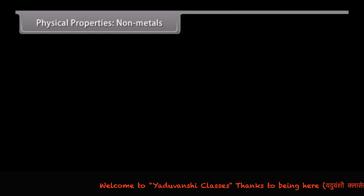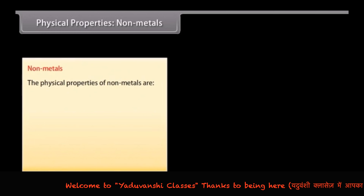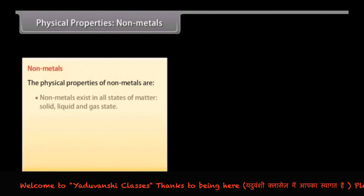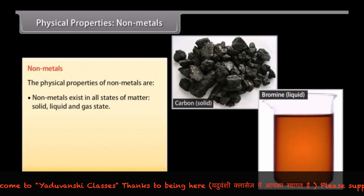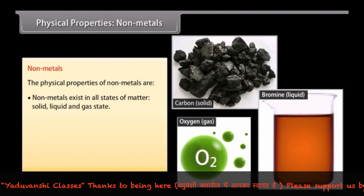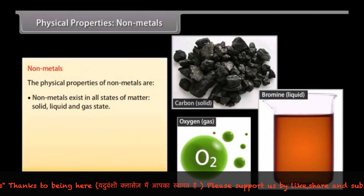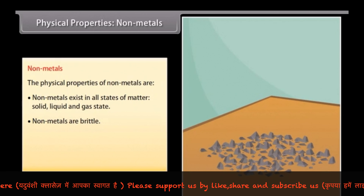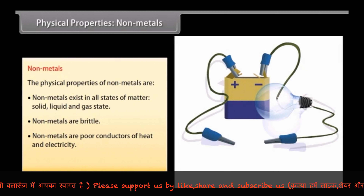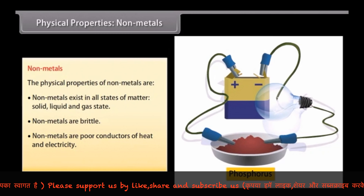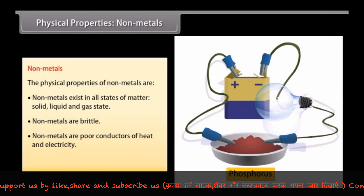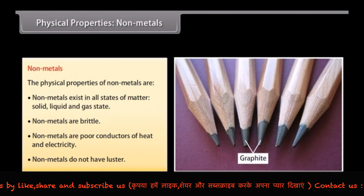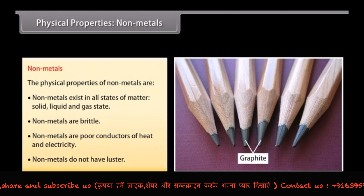Physical properties of non-metals. Non-metals exist as solids, liquids, or gases at room temperature. Examples — gas: oxygen, chlorine, fluorine; liquid: bromine; solid: carbon. Non-malleable and non-ductile: non-metals are brittle and cannot be rolled into wires or beaten into sheets. Poor conductors of heat and electricity: non-metals are poor conductors of heat and electricity. Lustre: non-metals have no metallic lustre and do not reflect light.